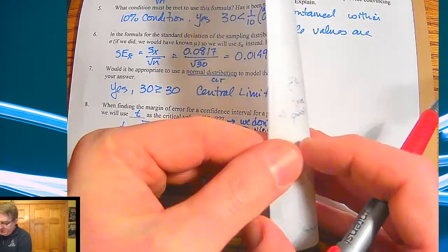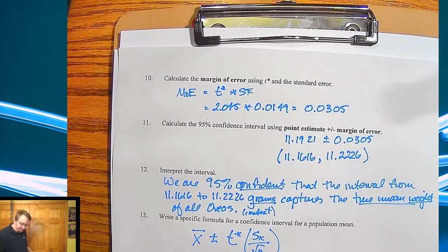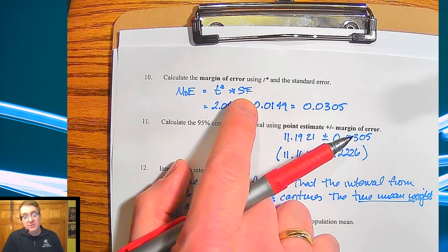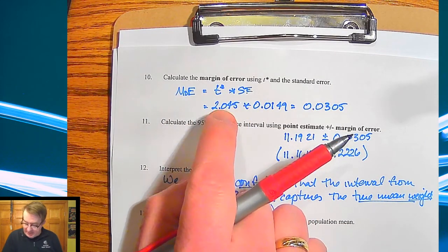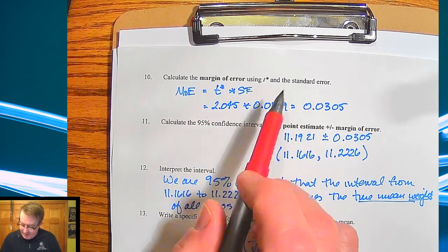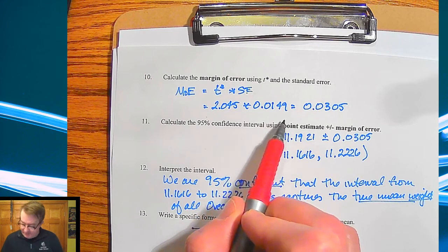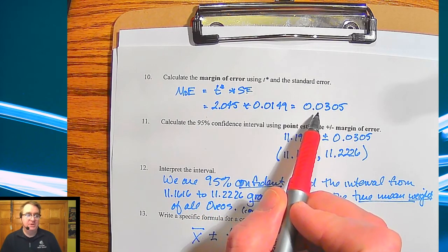All right so let's start piecing this together. Margin of error just like before it's going to be a t-score times our standard error. So in this case here it's 2.045 times 0.0149 which was the standard error that we found above. So that gives me 0.0305.